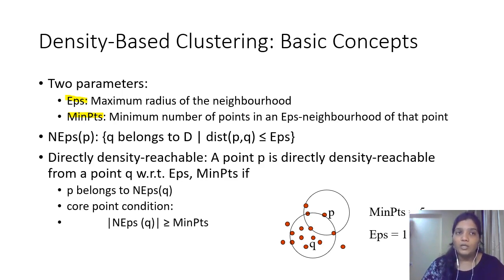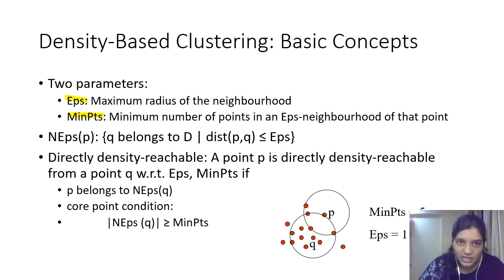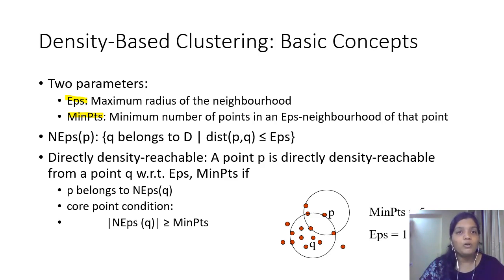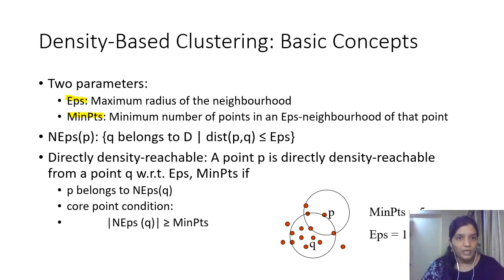How many points must be included inside the circle is defined by the minimum points parameter. Minimum points is the minimum number of points in the epsilon neighborhood of a particular point. The neighborhood of point P with respect to epsilon is given by all points Q in the dataset such that the distance between P and Q is less than or equal to epsilon.